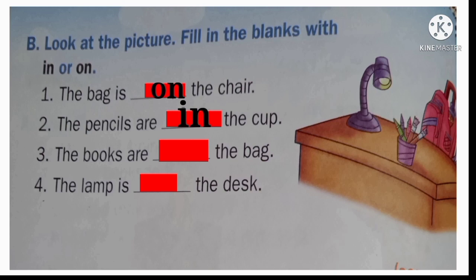Number three: The books are blank the bag. In this picture we can see where the books are. The books are in the bag. 'In' connects the relation between the books and the bag. Number four: The lamp is blank the desk. Where is the lamp? The lamp is on the desk. Very good. So 'in' and 'on' tell where someone or something is — the position of the naming word or pronoun.